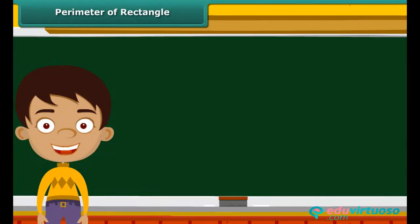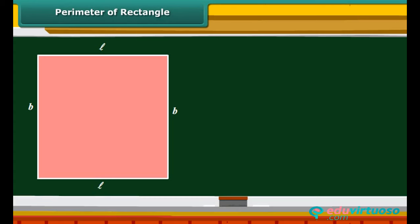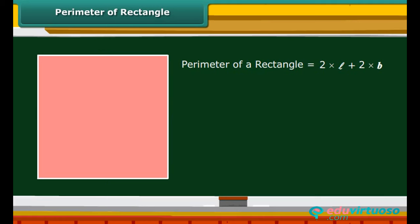Let us now calculate the perimeter of a rectangle. A rectangle is a four-sided geometric figure whose opposite sides are equal. Therefore, the perimeter of a rectangle is twice its length plus twice its breadth. We can rearrange and say that the perimeter of a rectangle is twice the sum of its length and breadth.